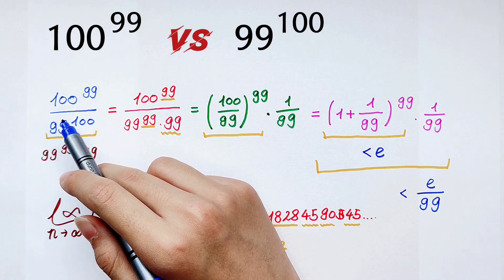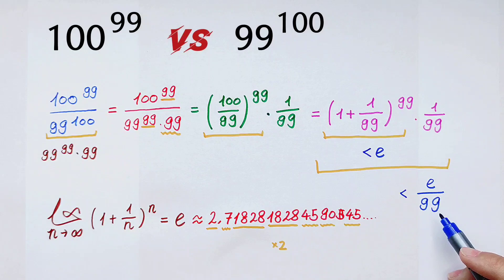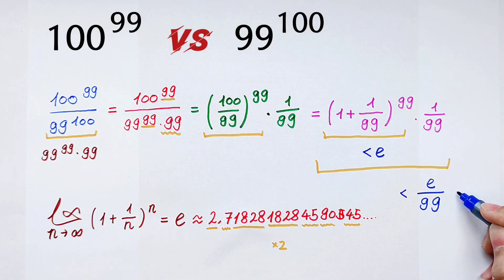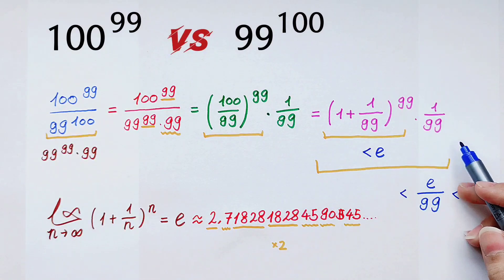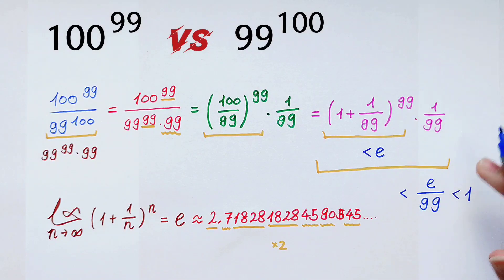That is, the numerator is smaller than the denominator. So now we just compare e/99 with 1. You know, e is this, so it is smaller than 1. So this value is smaller than e/99, and e/99 is also smaller than 1. So it is smaller than 1.